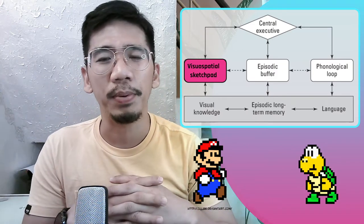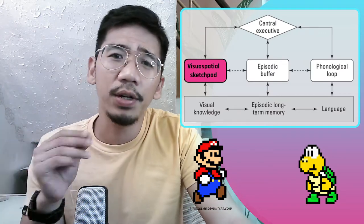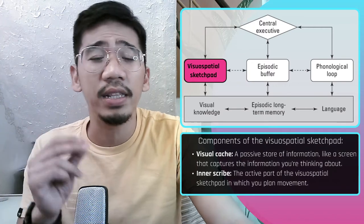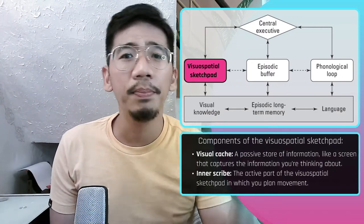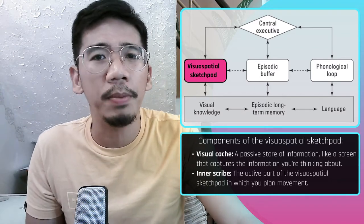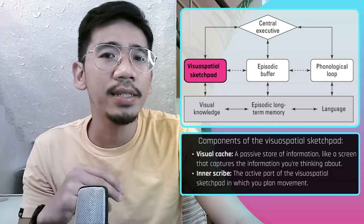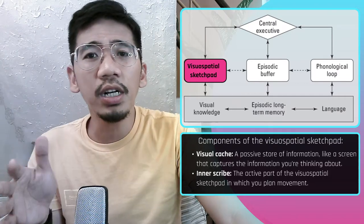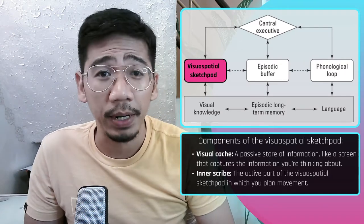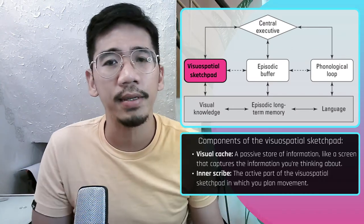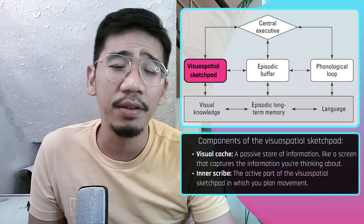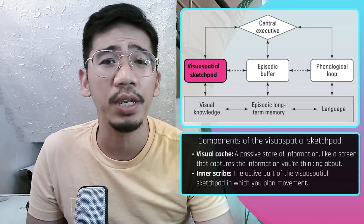Evidence for the visuospatial sketchpad comes from data suggesting that completing two visual tasks at the same time is very difficult. For example, if participants simply watch a ball move around a screen, they perform much less accurately when asked to imagine a route around a university at the same time than when asked to remember words instead. Considerable evidence suggests the visuospatial sketchpad is separable from the phonological loop: articulatory suppression has a much smaller effect on visual tasks than verbal tasks, and some patients have an intact phonological loop but an impaired visuospatial sketchpad.